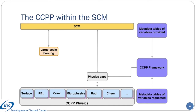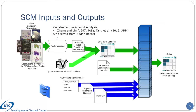At build time, the CCPP framework must also be given a description of the physics suite or suites for which to construct one or more software caps. In order to run the SCM model, one needs to configure both the case to run and the physics. This diagram shows how that is done through a total of five external files.